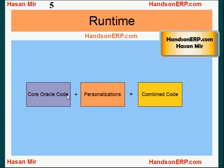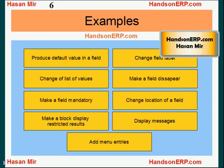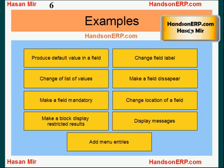At runtime, Oracle first reads the core Oracle code and then it adds personalizations on top of that to reach the combined code. This combined code is executed at runtime and produces the final effect. Here are some of the examples of things that you can achieve through personalizations.